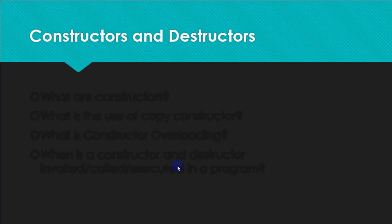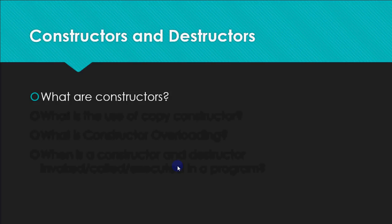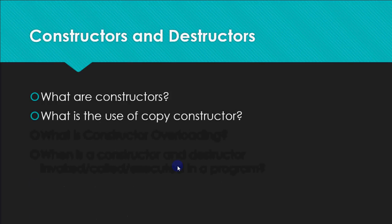Classes have special functions called constructors and destructors. Constructors are special functions used to initialize the objects of a class; they are called automatically whenever an object of the class is created. The name of the constructor must be the same as the name of the class, and it cannot return anything — there is no return type. There are three types of constructors: default, parameterized, and copy. Copy constructors are used to initialize an object of a class with the values of another object of the same class — it basically copies one object into another.